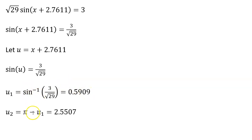And then my second solution is pi minus the first one. And again, the idea there is on a unit circle, we know the sine value, we know the y value, is 3 over root 29,